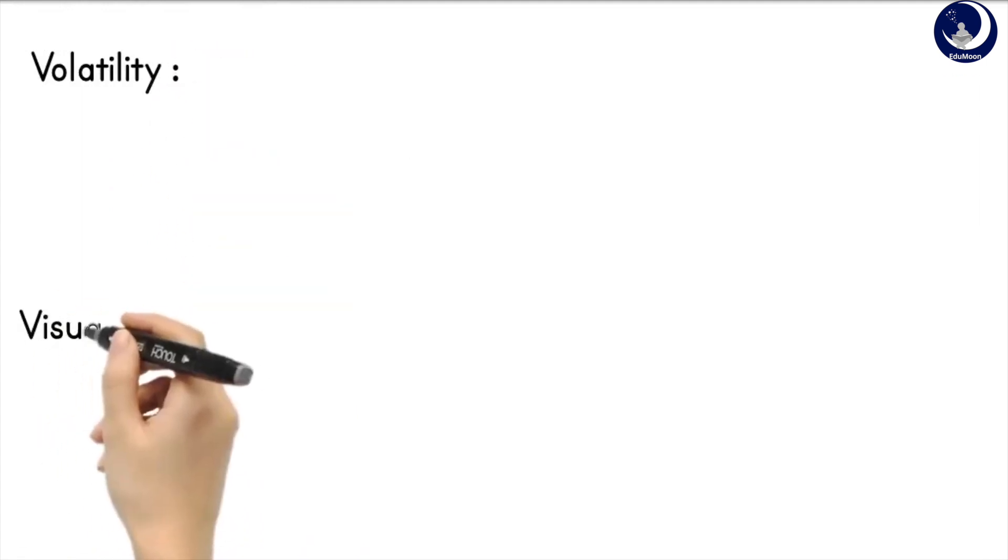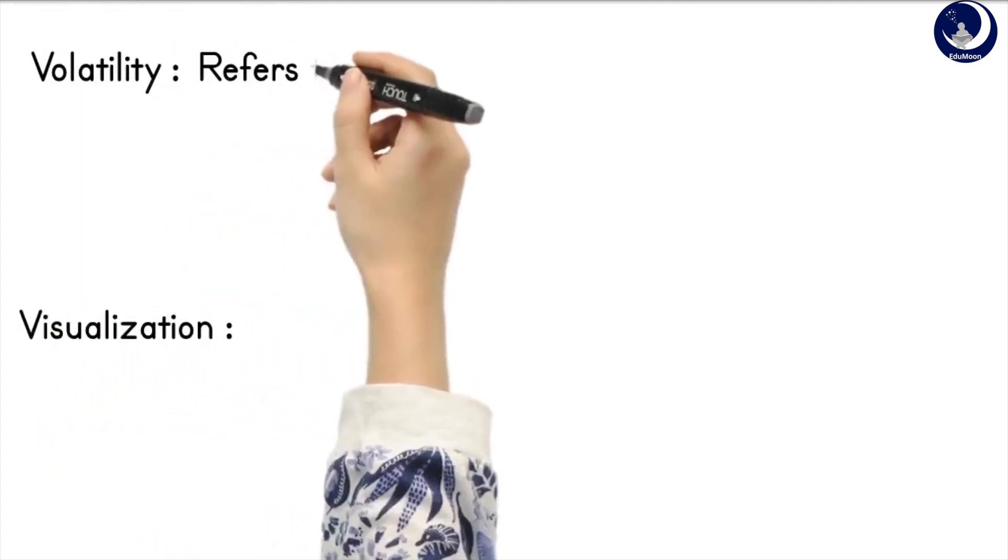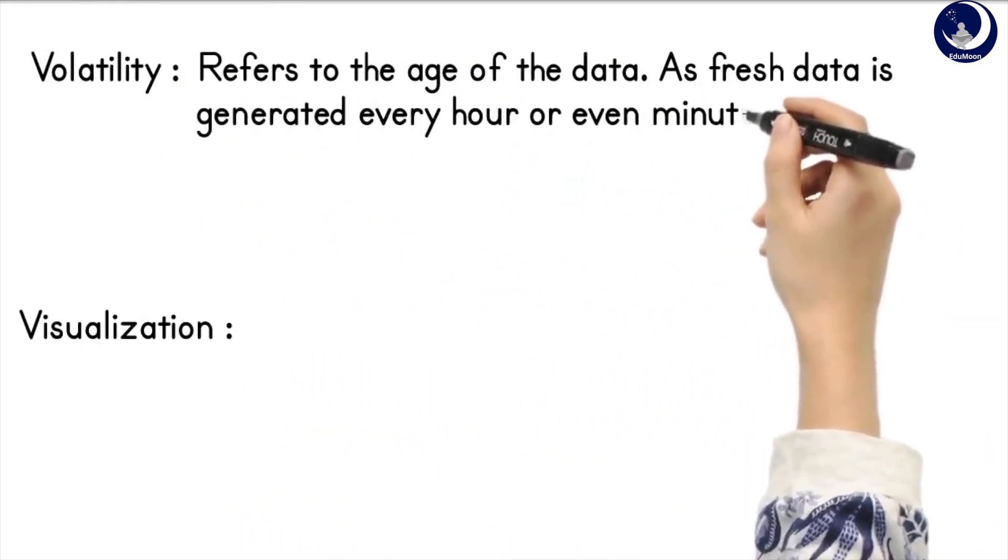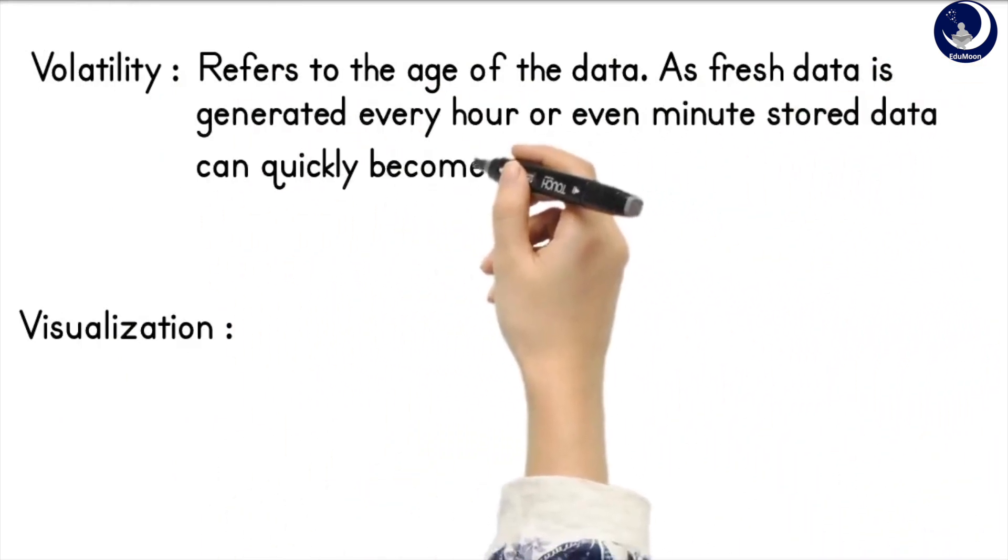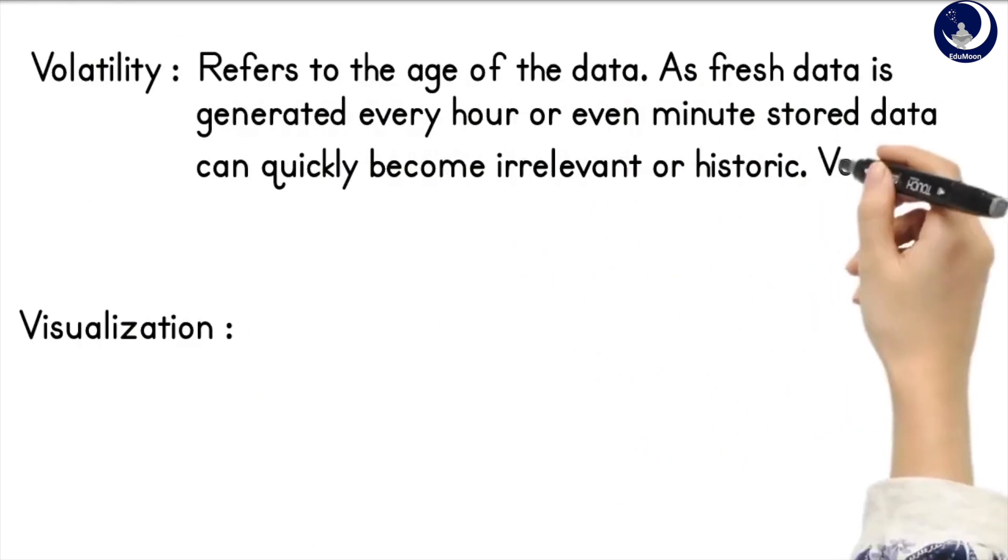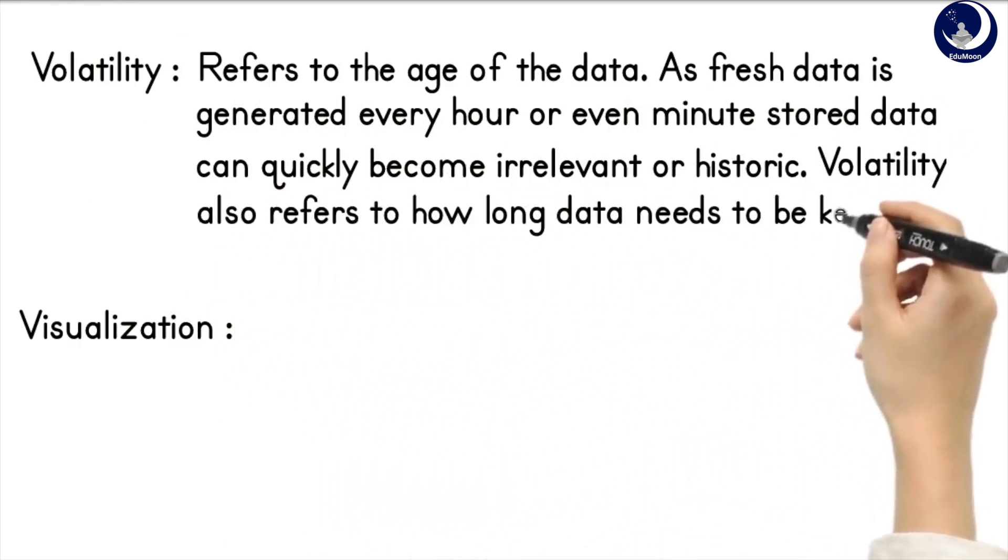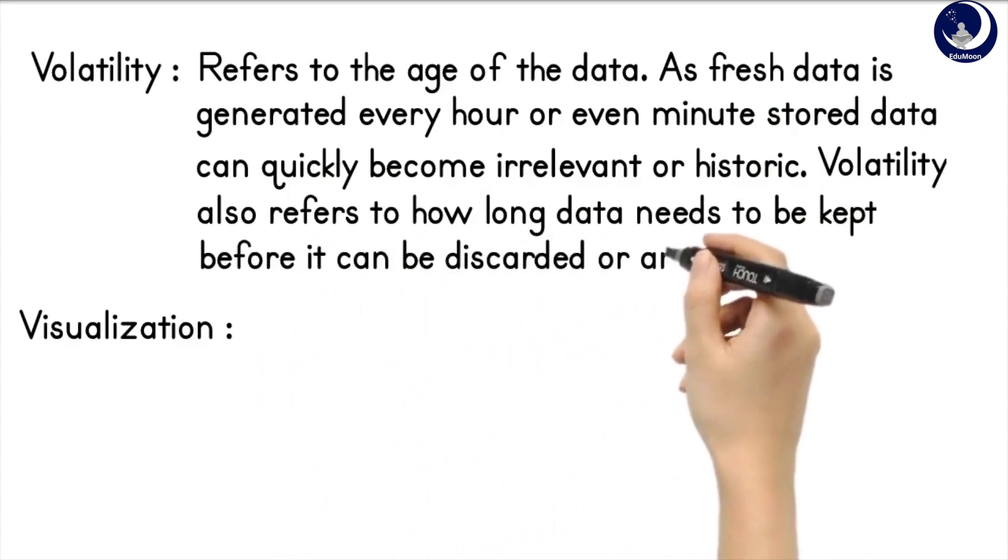Volatility refers to the age of the data. As fresh data is generated every hour or even minutes, stored data can quickly become irrelevant or historic. Volatility also refers to how long data needs to be kept before it can be discarded or archived.